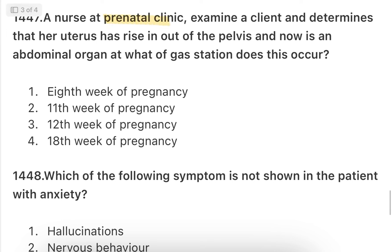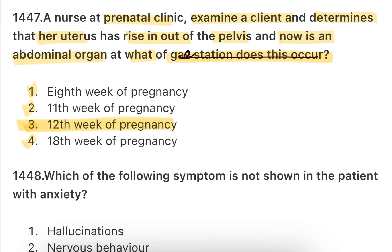Next: A nurse at a prenatal clinic examines a client and determines that her uterus has risen out of the pelvis and is now an abdominal organ. At what week of gestation does this occur? Options: 8th week, 12th week, 11th week, or 18th week. This happens after 3 months — at the 12th week of pregnancy the uterus becomes an abdominal organ. During the first trimester, the uterus is a pelvic organ; by the second trimester the baby starts to grow gradually.